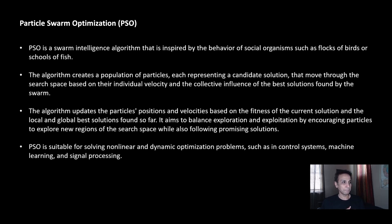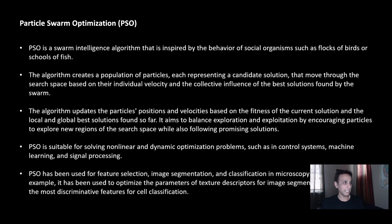Particle swarm optimization is suitable for solving nonlinear, dynamic optimization problems, machine learning, and signal processing. It has been used for feature selection, image segmentation, classification, and microscopy images. But when it comes to segmentation and classification, I tend to rely on deep learning.